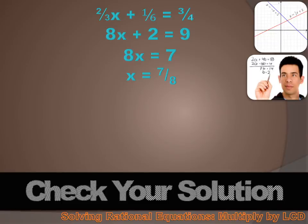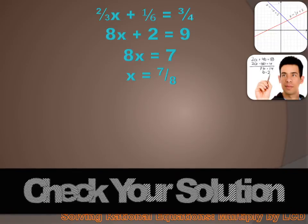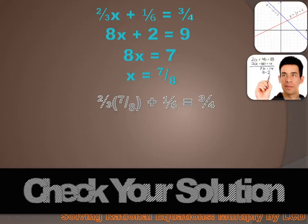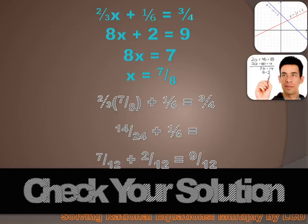Now we'll want to check our solution, so we'll substitute 7 eighths for x in our original equation: 2 thirds times x plus 1 sixth equals 3 quarters. When we do, it in fact does equal 3 quarters. Our solution works.